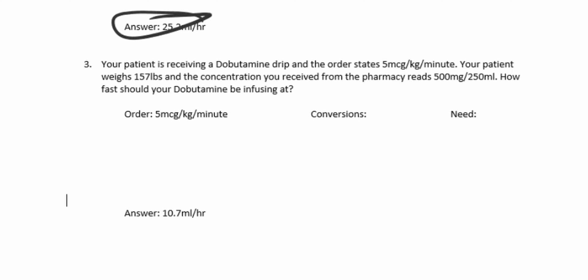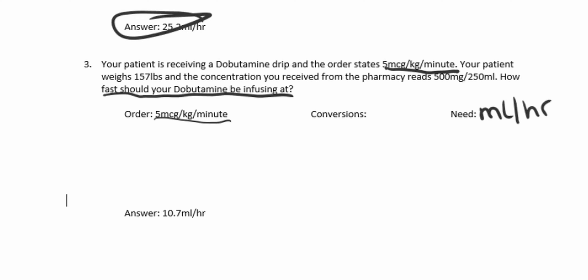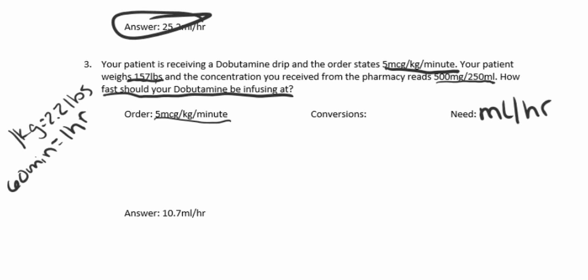Let's move on to number three. Your patient is receiving a dobutamine drip. The order states 5 micrograms per kilogram per minute. Your patient weighs 157 pounds and the concentration from pharmacy reads 500 milligrams per 250 mL. How fast should your dobutamine be infusing? We need milliliters per hour. We have pounds, so we need to convert to kilos: 1 kg equals 2.2 lbs. We have minutes, so we need 60 minutes equals one hour. And we have micrograms, so we need 1,000 micrograms equals 1 milligram.